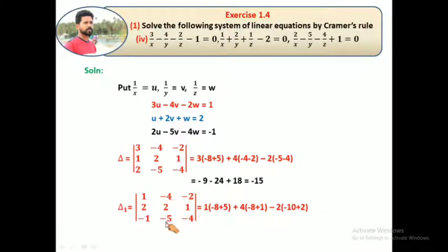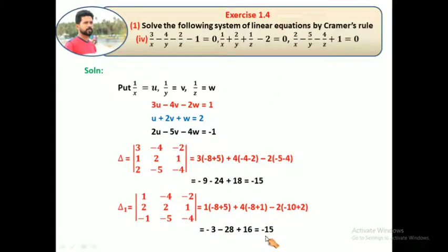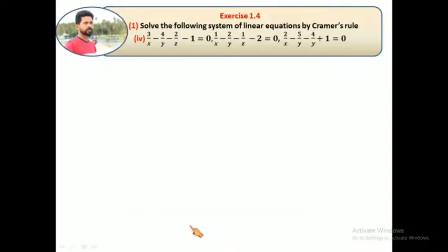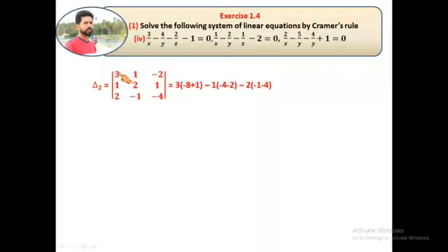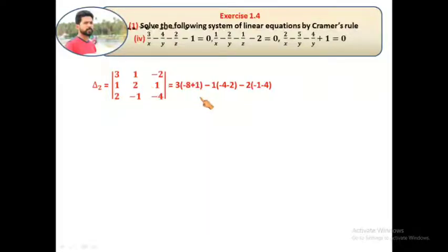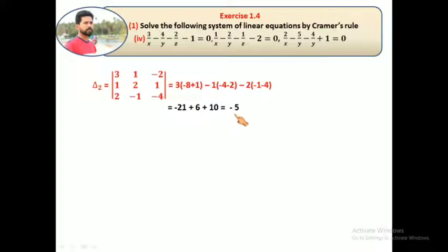For delta 1, we replace the first column with the constants and expand: plus 4 into (minus 8 plus 1) minus 2 into (minus 10 plus 2), giving delta 1 equal to minus 15. Next, delta 2 — replacing the second column with constants: 3 into (minus 8 plus 1) minus 1 into (minus 4 minus 2) then minus 2 into (minus 4 minus 1 minus 4), giving delta 2 equal to minus 5.